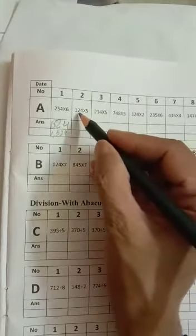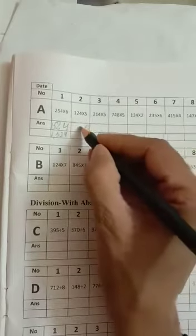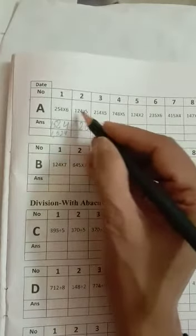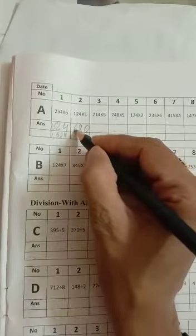Now question number 2. 5 4's are 20. Carry 2 in my mind. 5 2's are 10 plus 2 carry 12 is 2. Carry 1. 5 5 plus carry 1 is 6. 620.